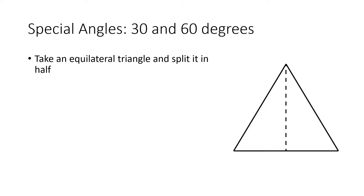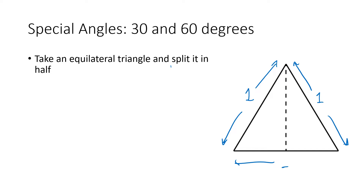First, let's talk about some special angles. One of the cases we want to discuss are 30 and 60 degree angles. The way we're going to use geometry here is to start with an equilateral triangle and split it in half. We're drawing this so that the lengths of the sides are one, so each of these three sides is exactly one unit. When we have an equilateral triangle, each of these angles is going to measure 60 degrees.